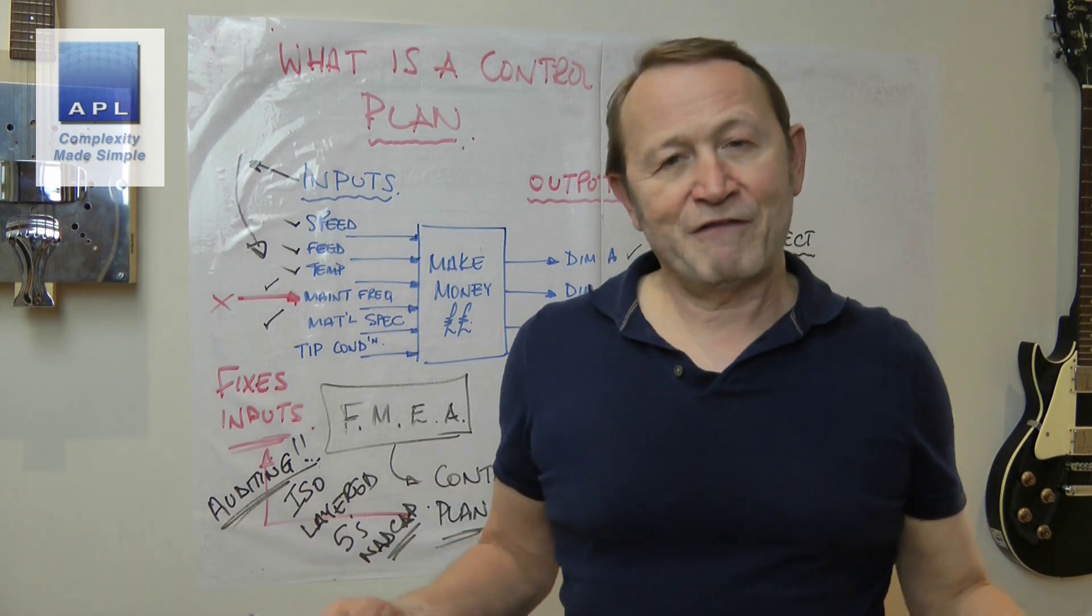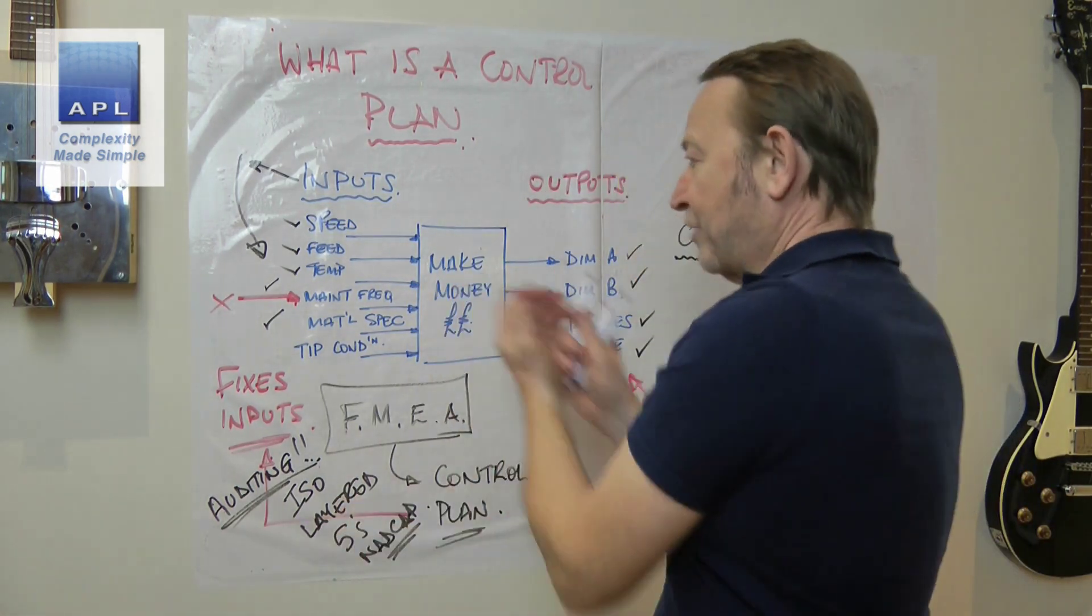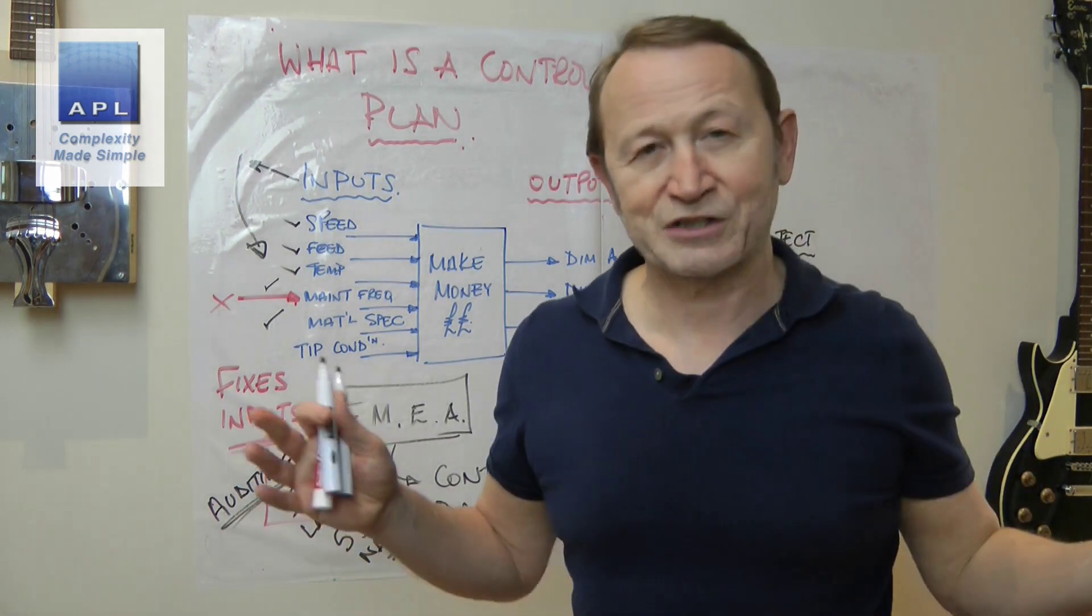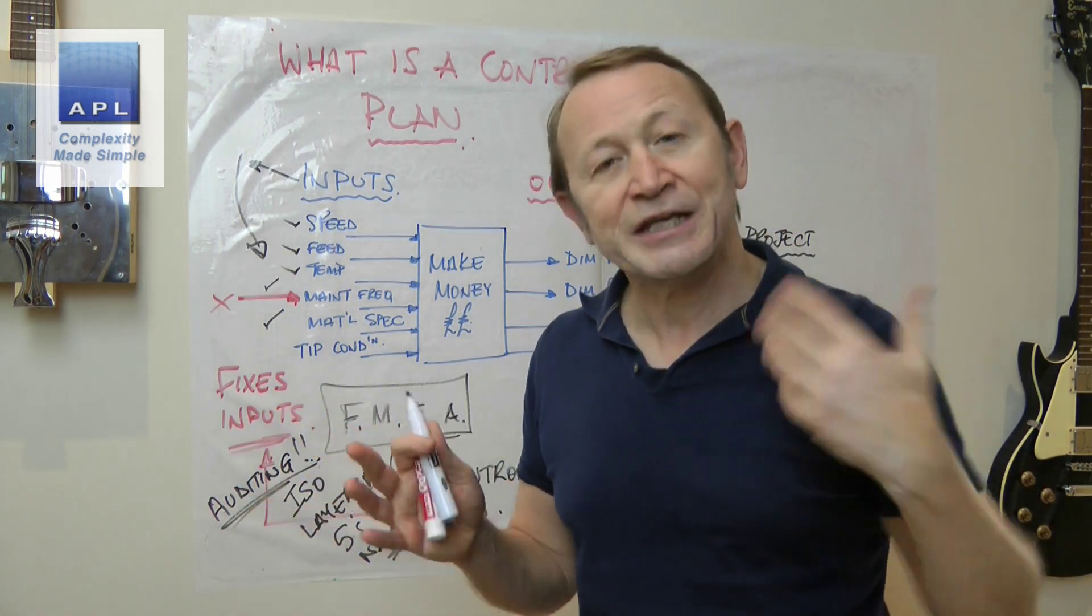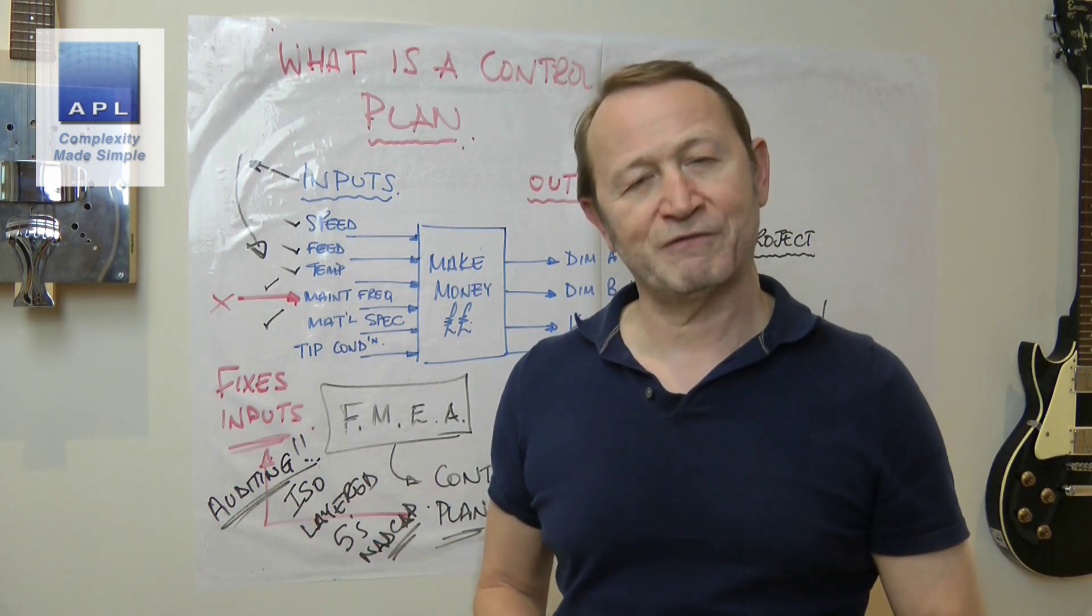Control comes on the inputs to the process. You fix them, maintain them, you put great controls in, and then what fixes them by the way? The auditing procedure. Once you've agreed what the rules are, what do you do? You audit the crap out of them. ISO layered 5S, NADCAP.